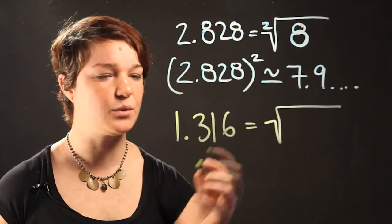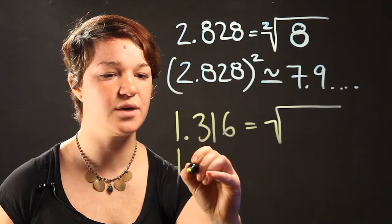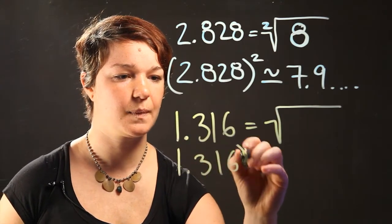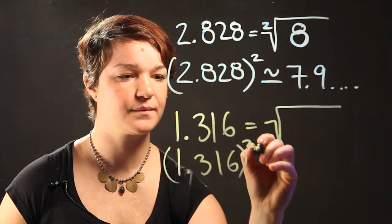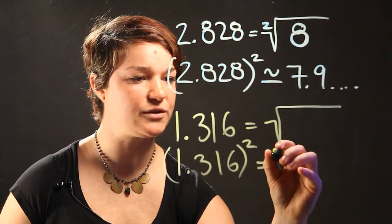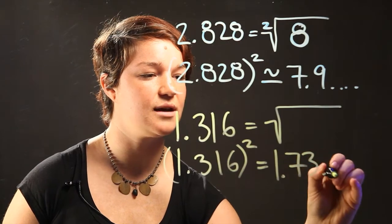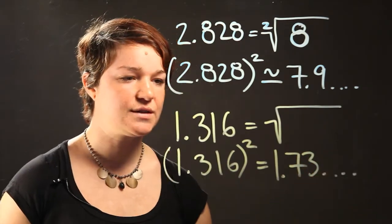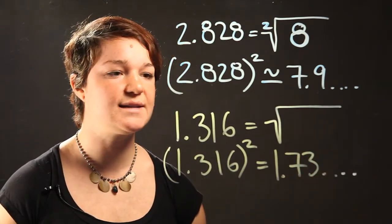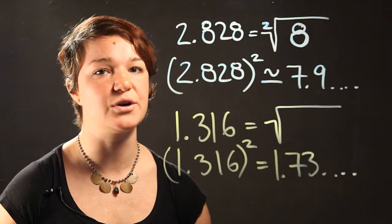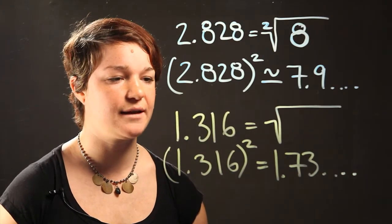So once again what we're going to start off with is taking 1.316 squared and this is going to come out to 1.73 dot dot dot. So 1.73 isn't close enough to an even number such as 2. So we're going to keep multiplying it.